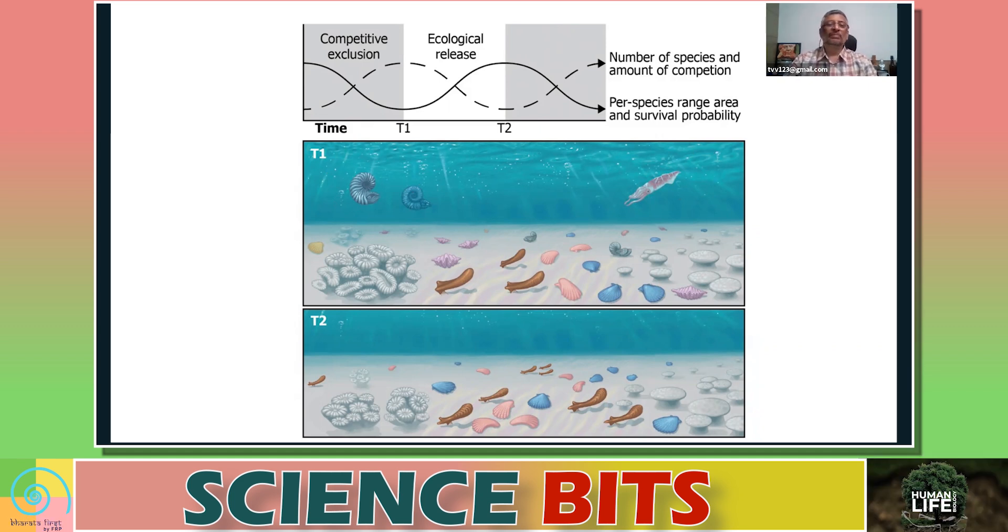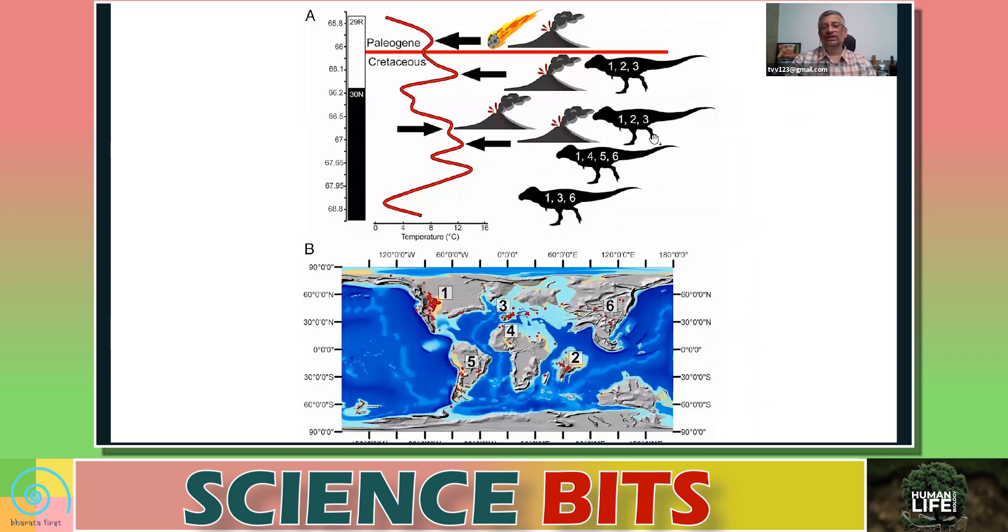So there are two things. There is a background extinction which means that regularly a certain number of species go extinct because there is a change in the environment. And mass extinction, because there is a sudden change in the environment, a large number of species go extinct in a short period of time.